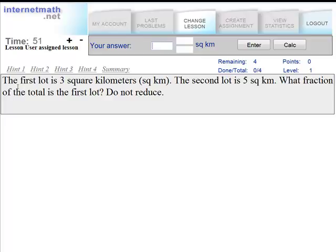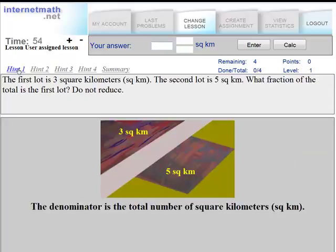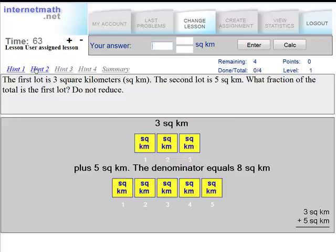If a student needs help, he clicks on hint 1. The denominator is the total number of square kilometers. Hint 2 and each additional hint further explains the problem. 3 square kilometers plus 5 square kilometers. The denominator equals 8 square kilometers. Notice how the pictures correspond to the numbers.